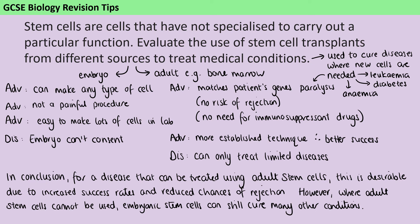We often talk about the fact that in order to get six marks, you don't need to include everything on the slide. To receive six marks for this question, you need to have talked about both embryonic and adult stem cells and compared these two different sources. You also need to mention the types of diseases they can be used to cure, and include at least one advantage and one disadvantage of each different source of stem cells.